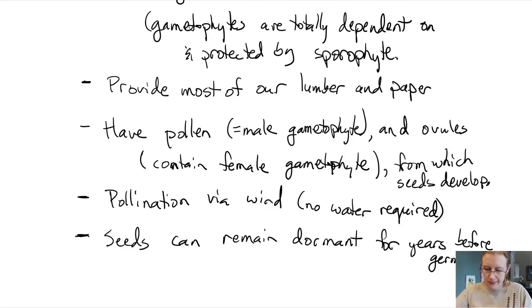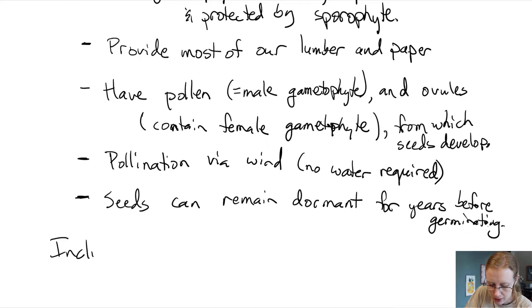So those are some details laid out about the gymnosperms. What do the gymnosperms include? So let's just get some familiar examples down. The gymnosperms include the conifers. So things that produce cones like pine cones. Those are examples of gymnosperms. Conifers.